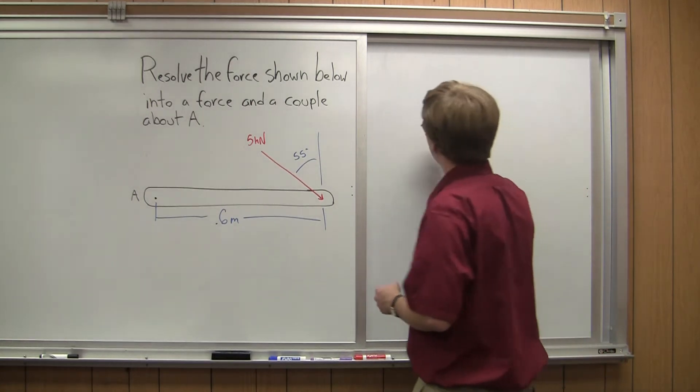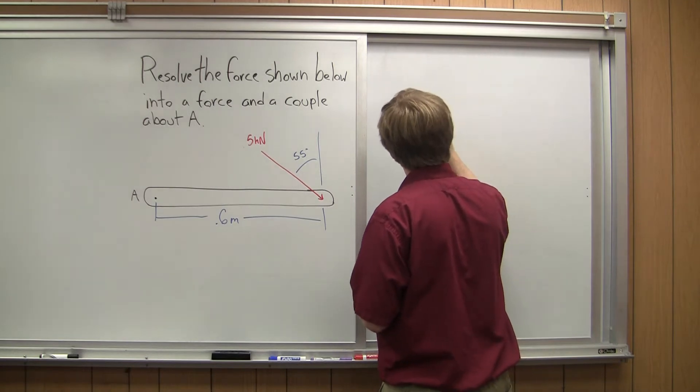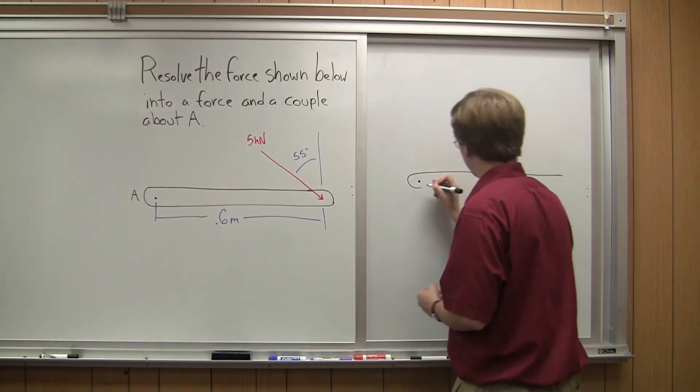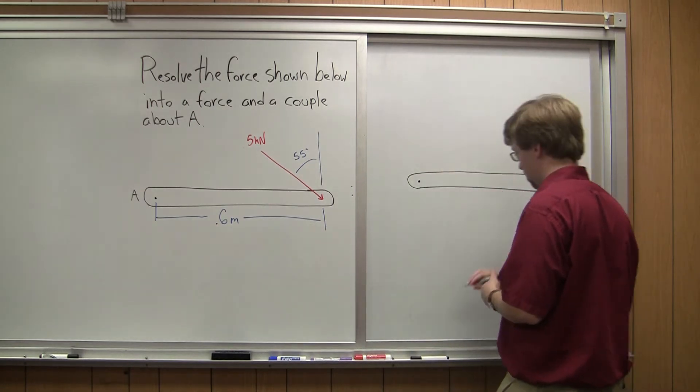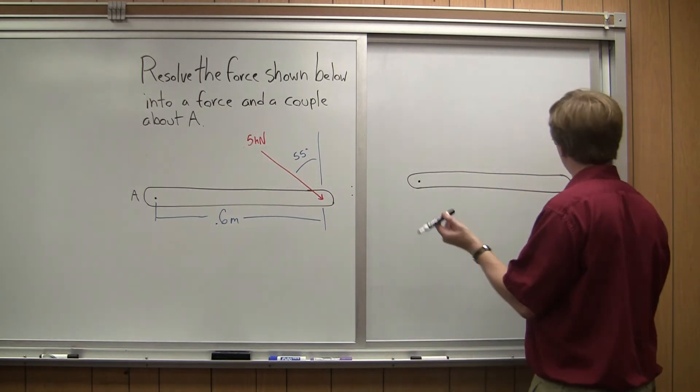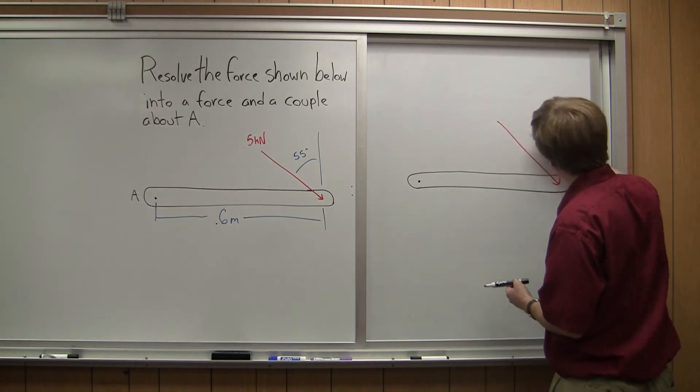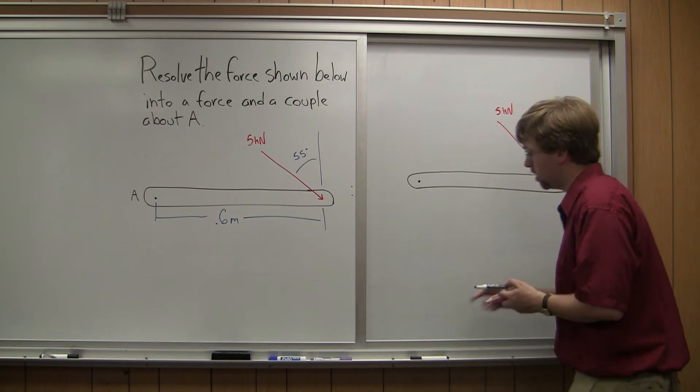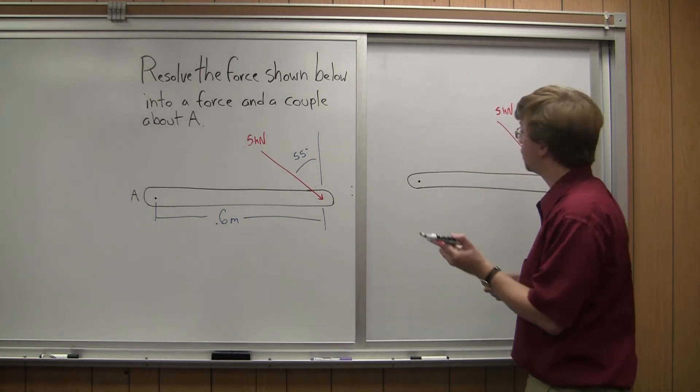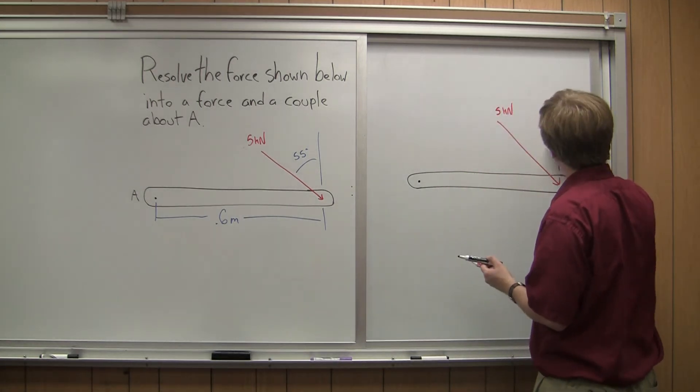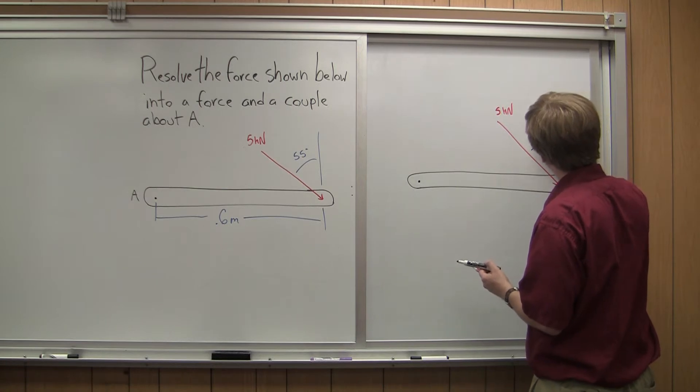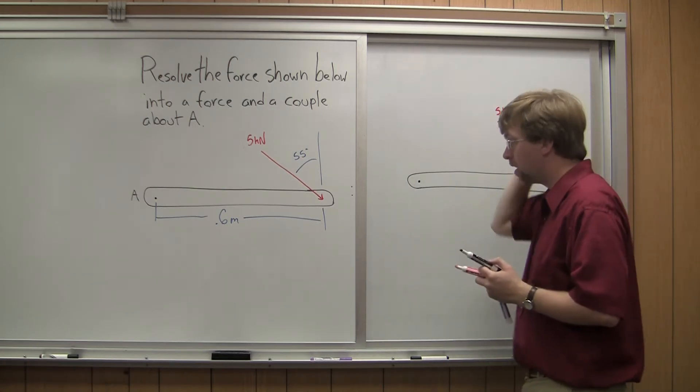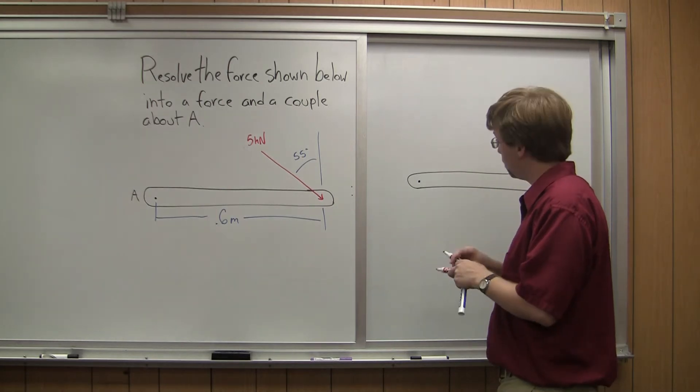So for that, the first thing I'm going to do is redraw my beam. If I take point A, draw my beam like this, I'm going to have my 5 kilonewton force out here, and I know that that is 55 degrees from vertical.